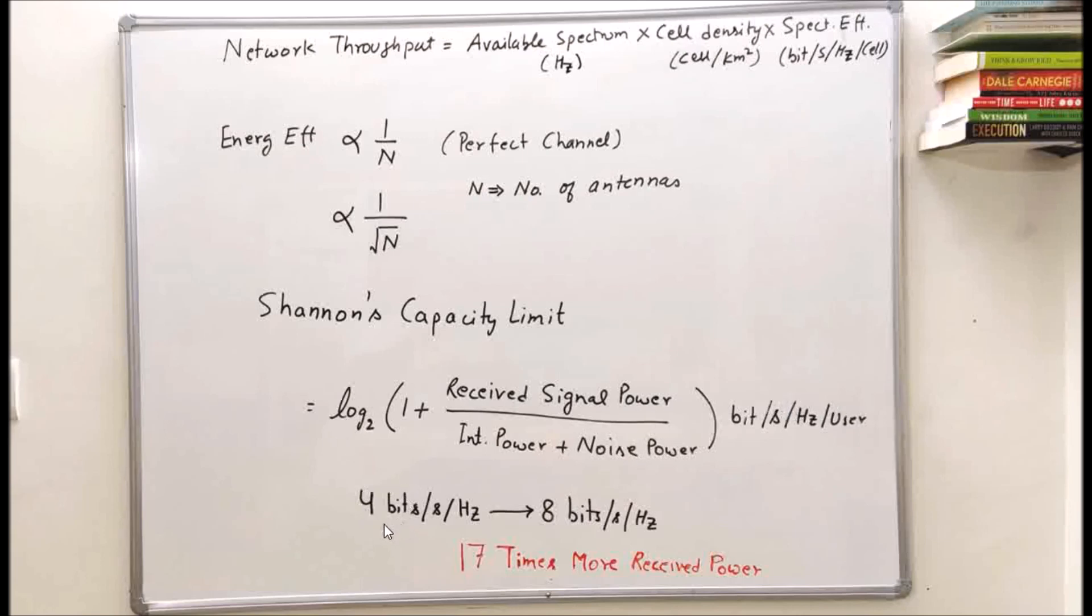This formula gives us spectral efficiency. For example, if we are looking for 4 bits per second per hertz, this number should be 16, that means this factor should be 15. And if we want to increase spectral efficiency to 8 bits per second per hertz, that means increase by a factor of 2, this number should be 256 or this factor should be 255. The ratio of 255 to 15 is 17, that means the receive signal power should be increased by a factor of 17, while that is not the case for massive MIMO. Here we can see that massive MIMO gives us higher spectral efficiency.